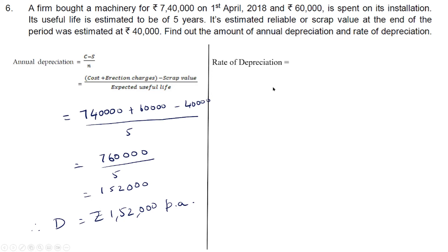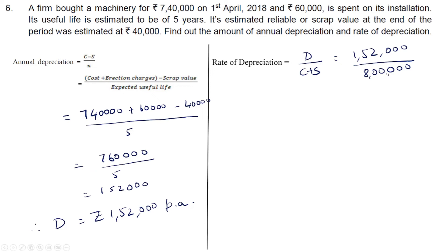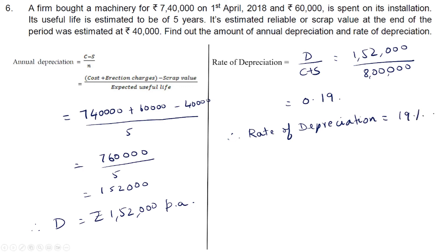Next we find the rate of depreciation. The rate of depreciation is the annual depreciation divided by the total cost. So rate = 1,52,000 / (7,40,000 + 60,000) = 1,52,000 / 8,00,000 = 0.19. Therefore the rate of depreciation is 19 percent. So every year the machinery depreciates at a rate of 19 percent.